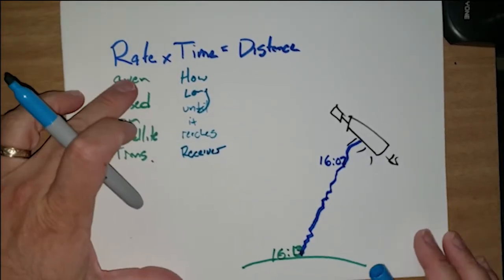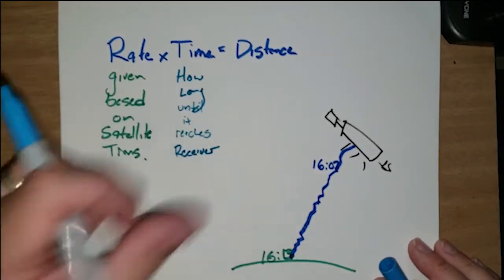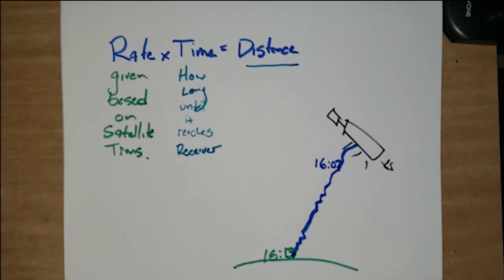If I've got the rate and I've got the time, then I've got the distance. And this is the glory of GPS, is having that distance. Why? Who cares? Well, let me show you why. Let's go back to our scenario, but this time I'm going to put more satellites up in the sky.